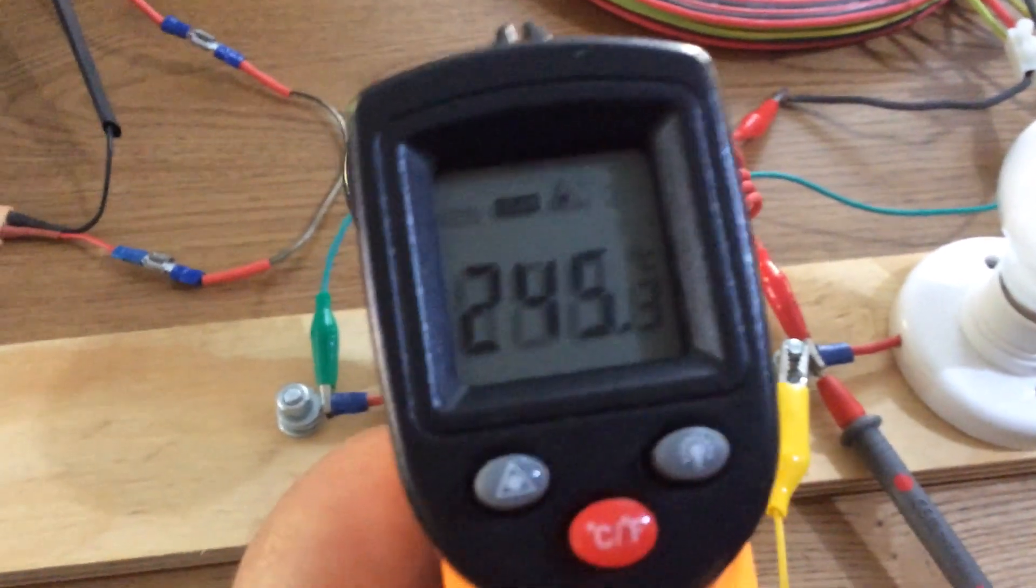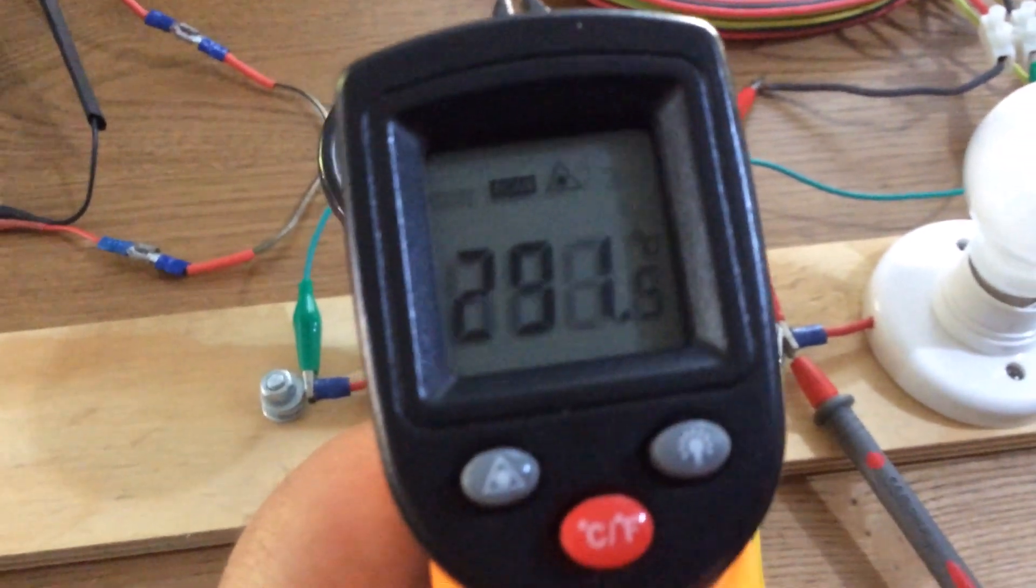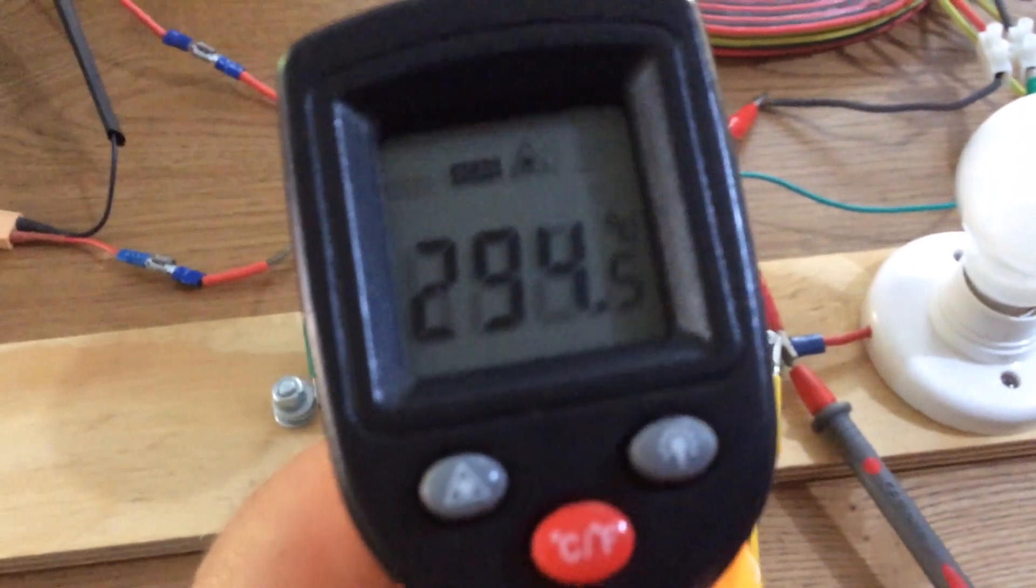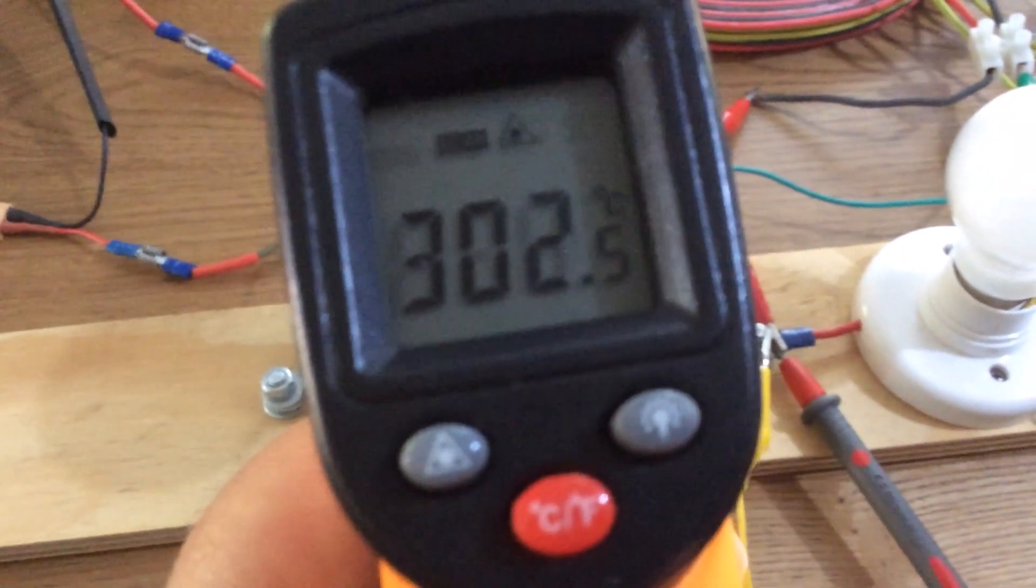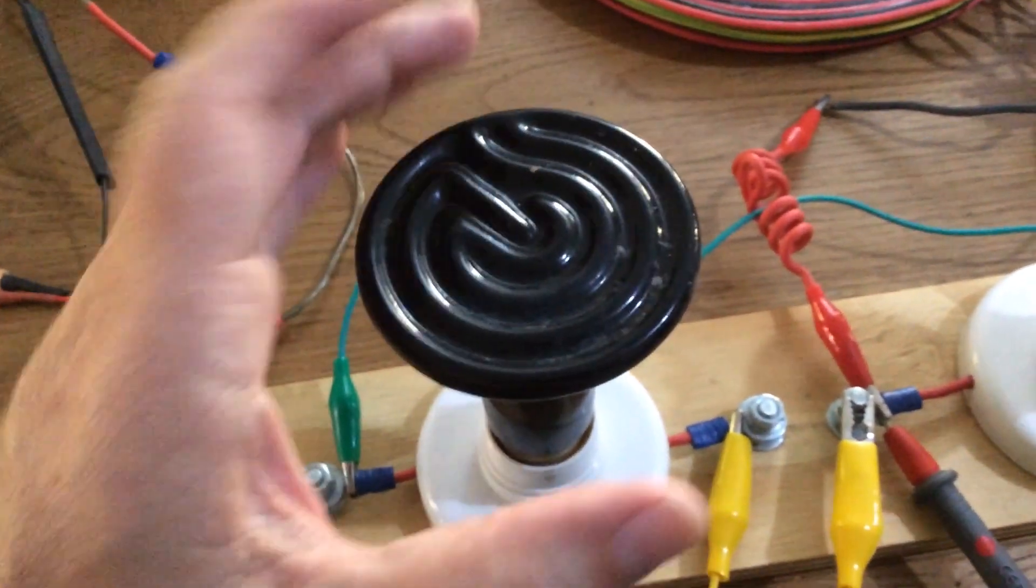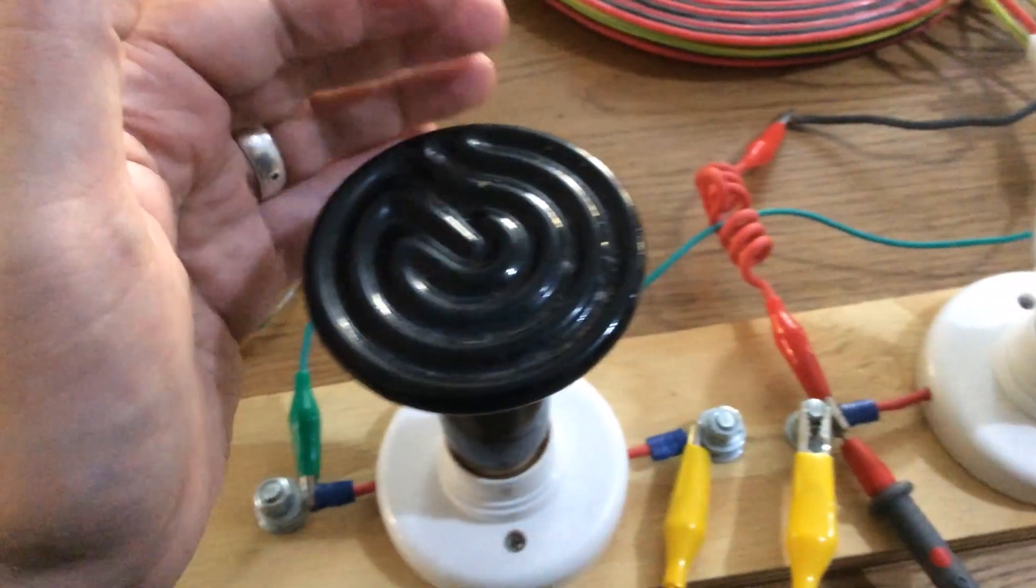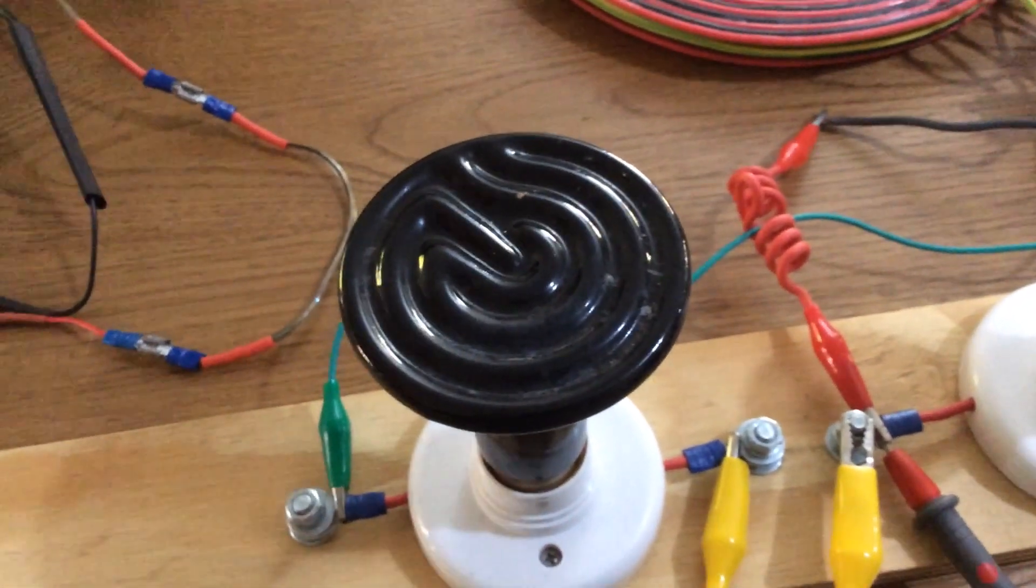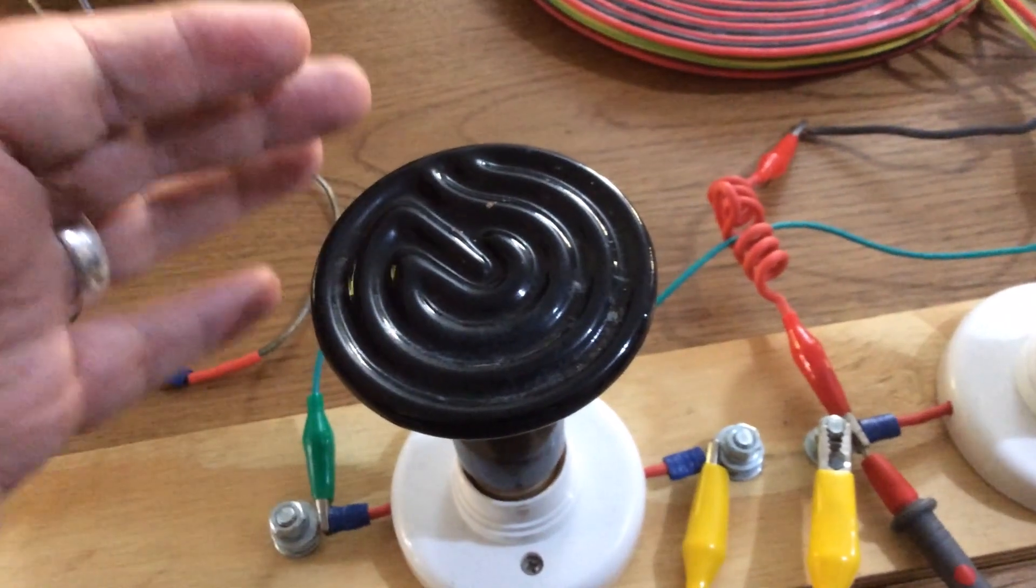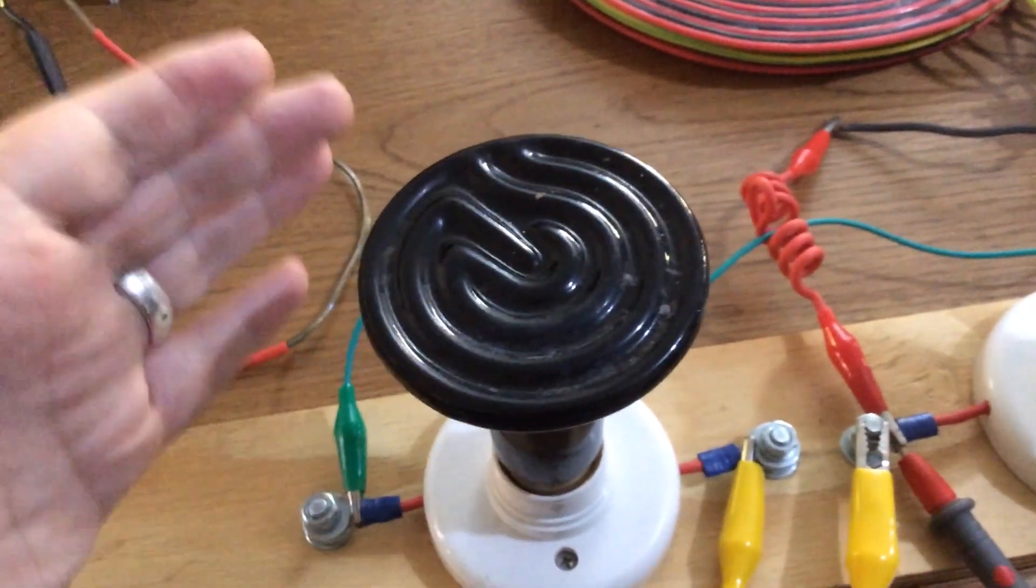But yeah, it's interesting to note that something can heat up, you know, quite as much as this does. So we're over 300 there now in such a short space of time. And if that was buried, that whole element was buried inside a stainless steel pot, as I said, with sand in it, or you could use an element from an old kettle, an electric kettle.